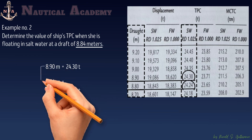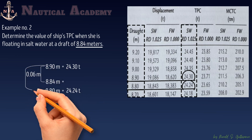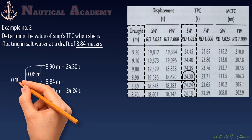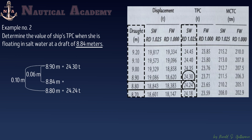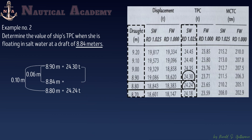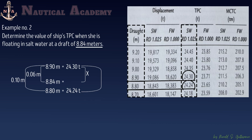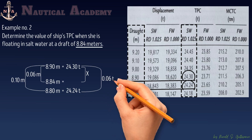Get the difference between drafts 8.90 meters and 8.84 meters: the difference is 0.06 meter, or 6 centimeters. Next, get the difference between 8.90 meters and 8.80 meters: that is 0.10 meter, or 10 centimeters. Then get the difference between the TPC at 8.90 meters, which is 24.30 tons, and the TPC at 8.80 meters, which is 24.24 tons: the difference is 0.06 tons, around 60 kilograms.